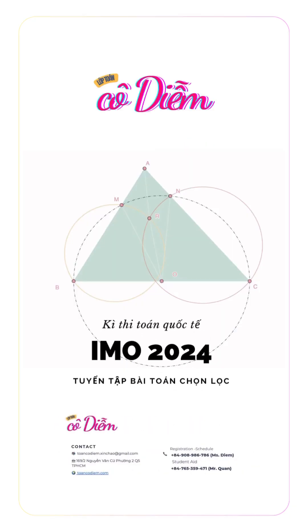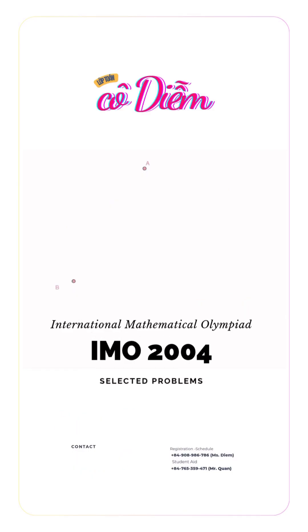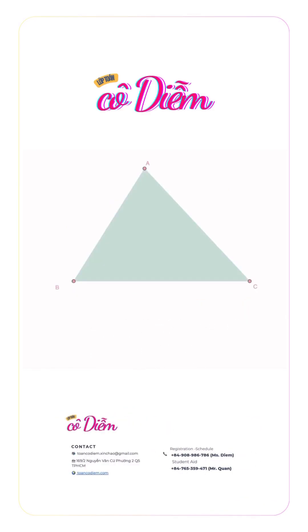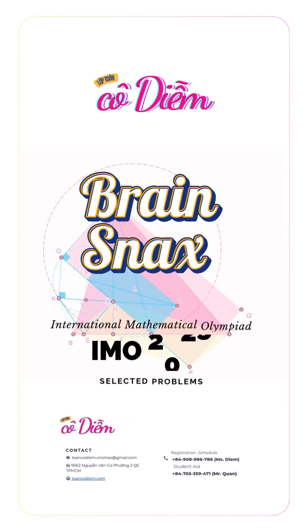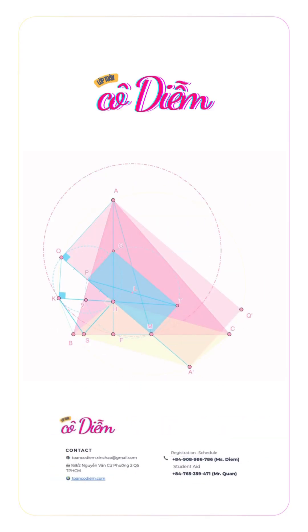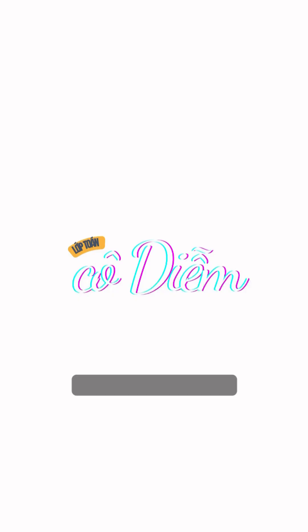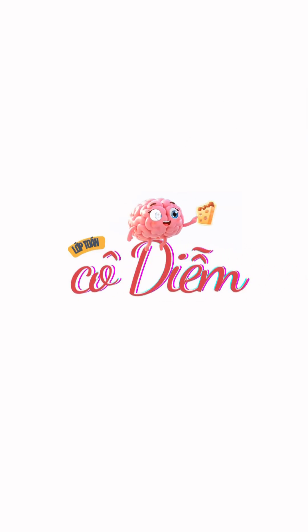IMO 2004: given an acute triangle ABC, the circle with diameter BC intersects sides AB and AC. IMO 2015: given an acute triangle ABC, let O be the circumcircle of the triangle, H the orthocenter, F the foot of the altitude from vertex A. Part 2 is the advantage.